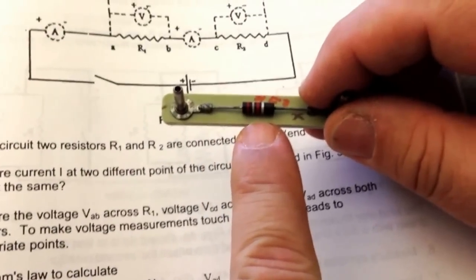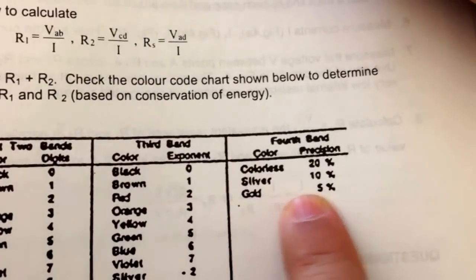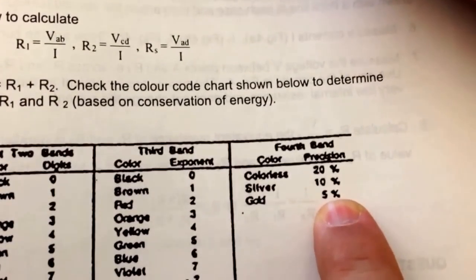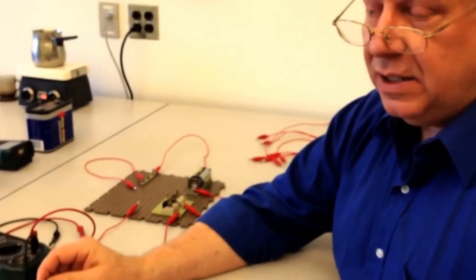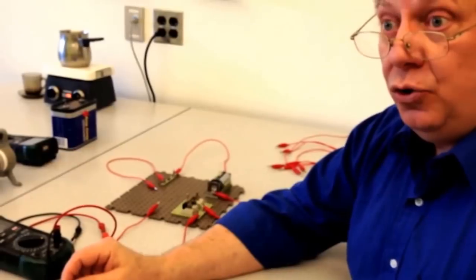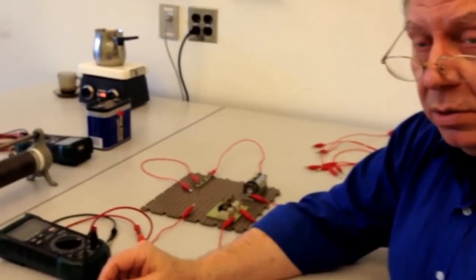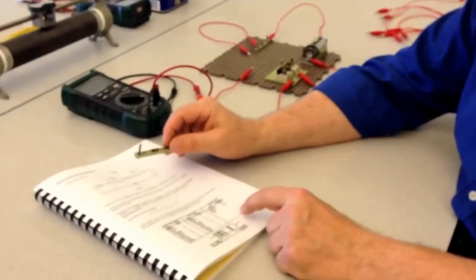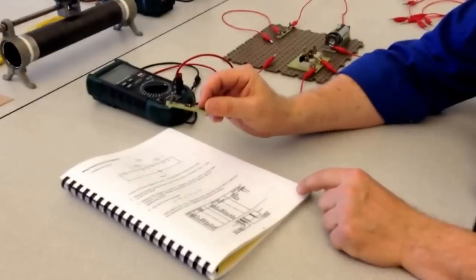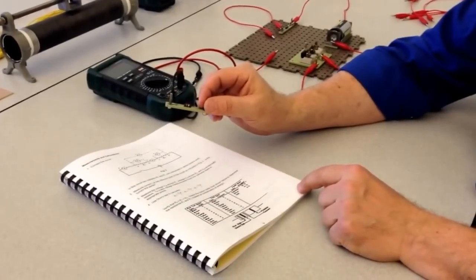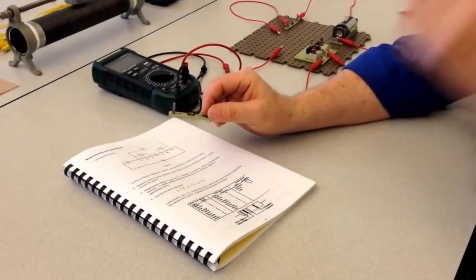Now, the fourth band is our precision band. You notice that it's silver here. Silver corresponds to 10%. So that means that this rated value may not necessarily be 2,700 ohms, but it could be as much as 270 ohms more or 270 ohms less. And the manufacturer can still get away by rating it as a 2,700 ohm resistor.